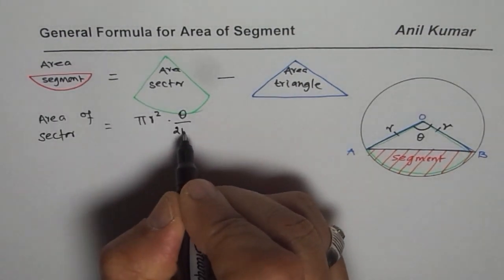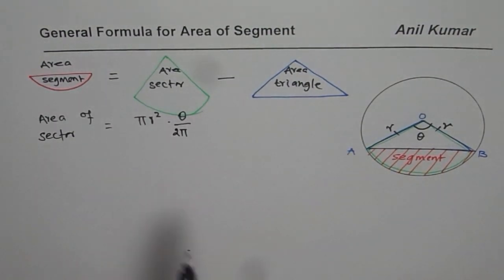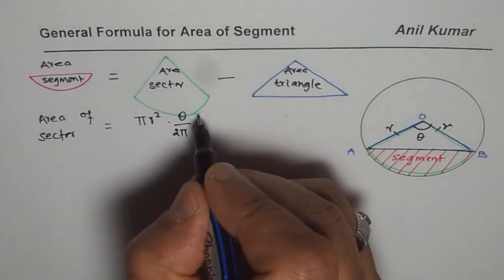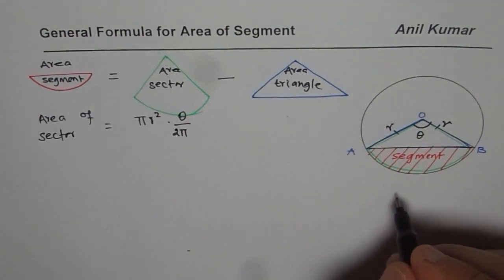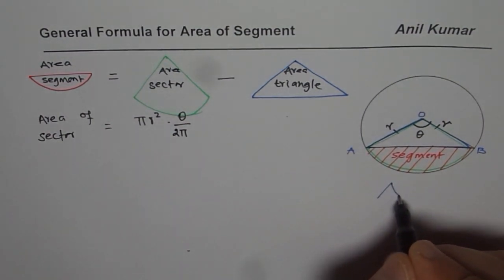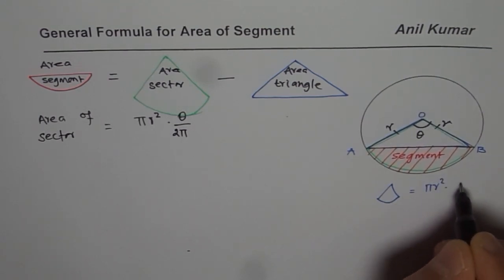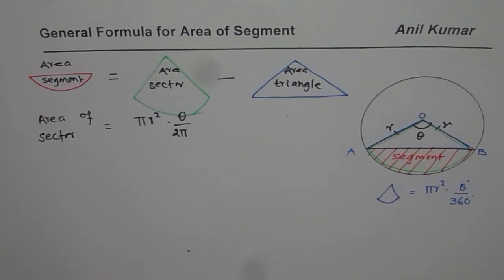So this time, I will take 2 pi in radians. So those of you who are doing it in degrees, for them this formula will be equal to, so we will write here, the sector will be pi r squared times theta over 360 degrees if you are taking in degrees.